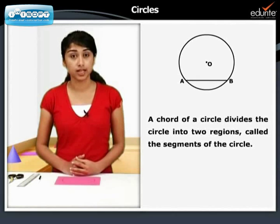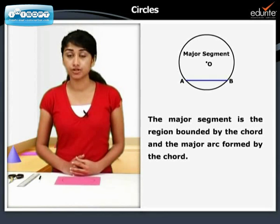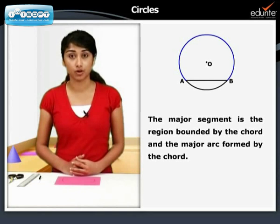A chord of a circle divides the circle into two regions called the segments of the circle. The major segment is the region bounded by the chord and the major arc formed by the chord.